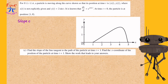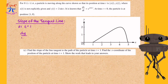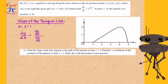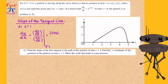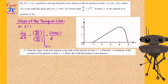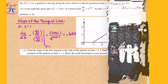Part c: find the slope of the tangent line to the path of the particle at time t equals 1, and find the x coordinate of the position of the particle at t equals 1. The slope of the tangent line would be dy/dx evaluated at t equals 1. Since the graph is in terms of x and y, the slope is dy/dt divided by dx/dt, evaluated at t equals 1. Using our expressions for y prime and x prime and plugging in t equals 1, we get a value of approximately 0.630.